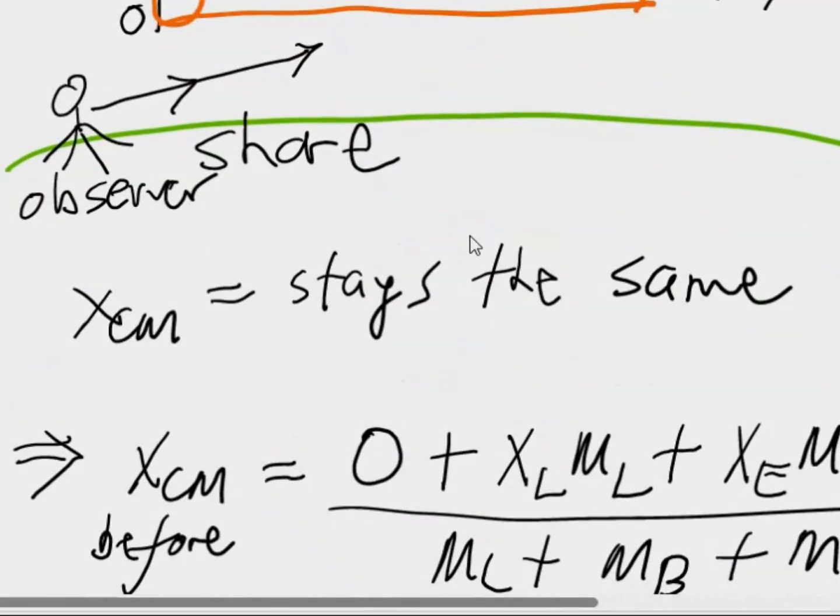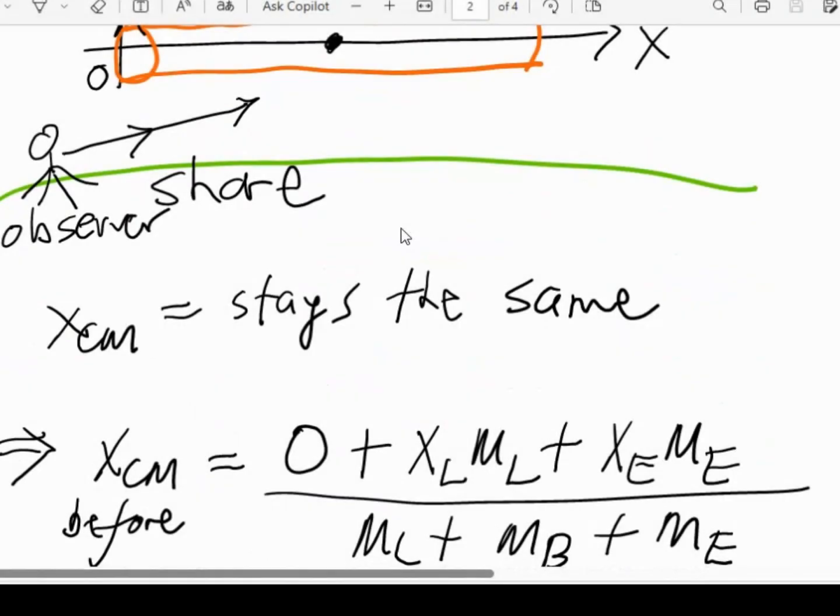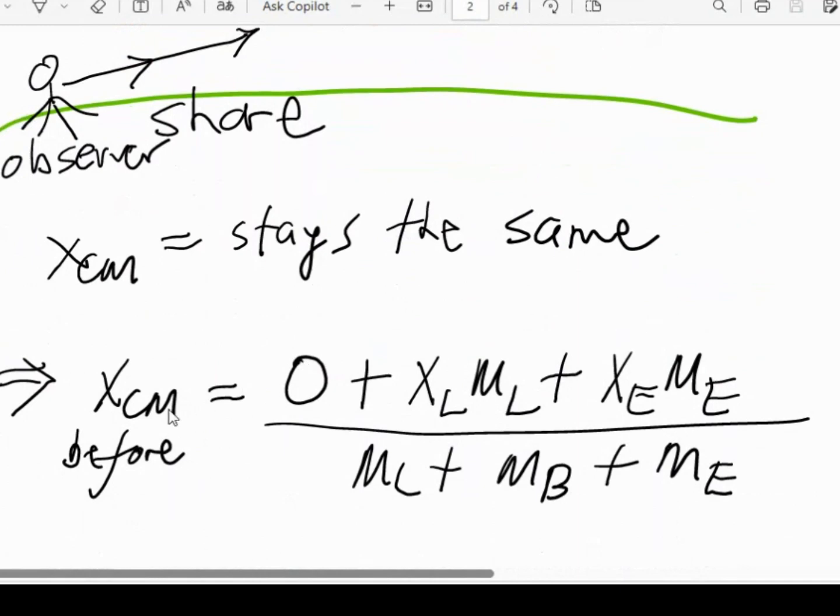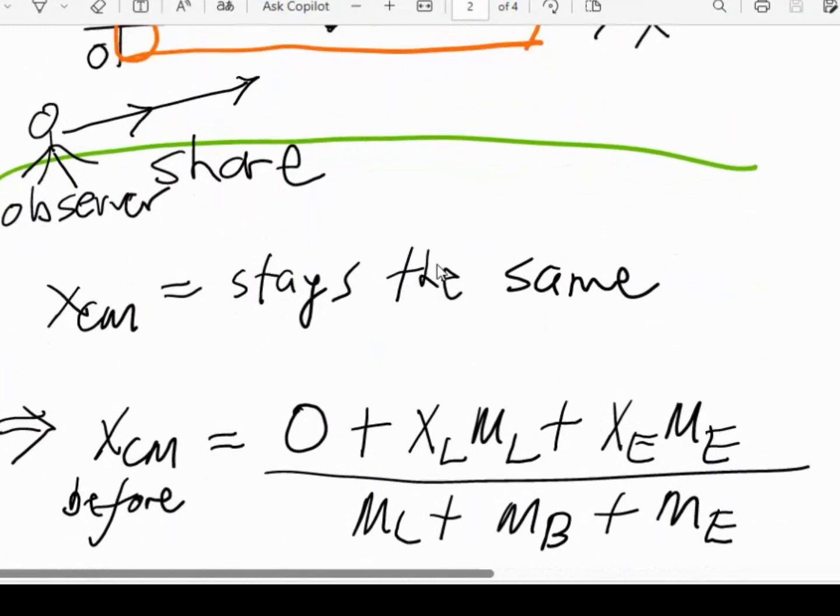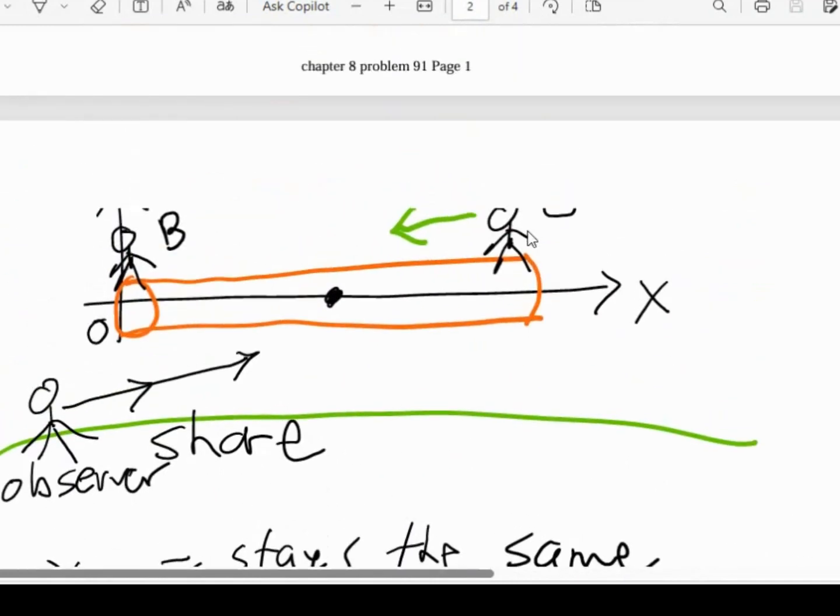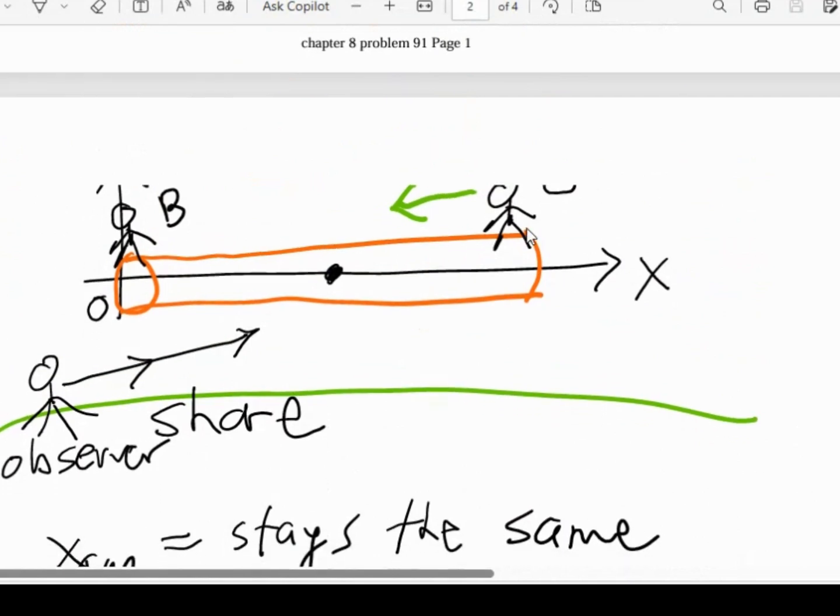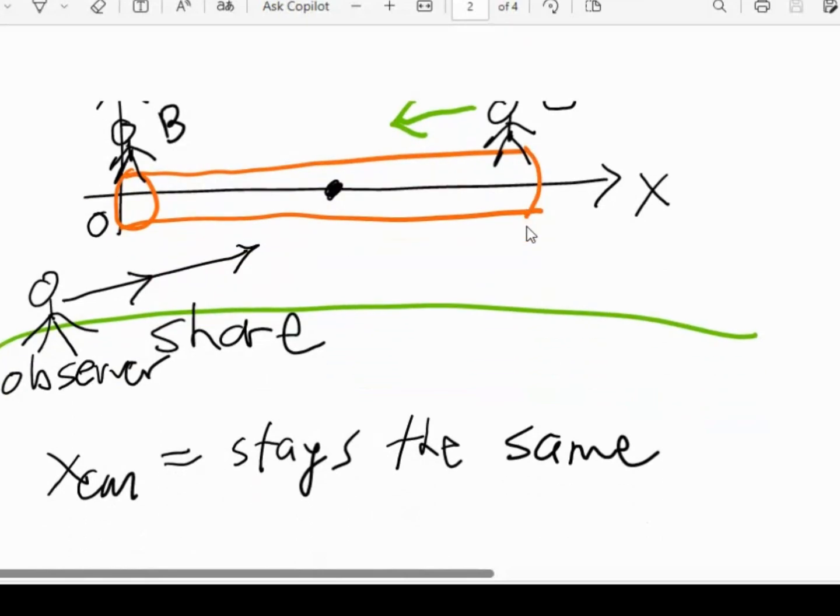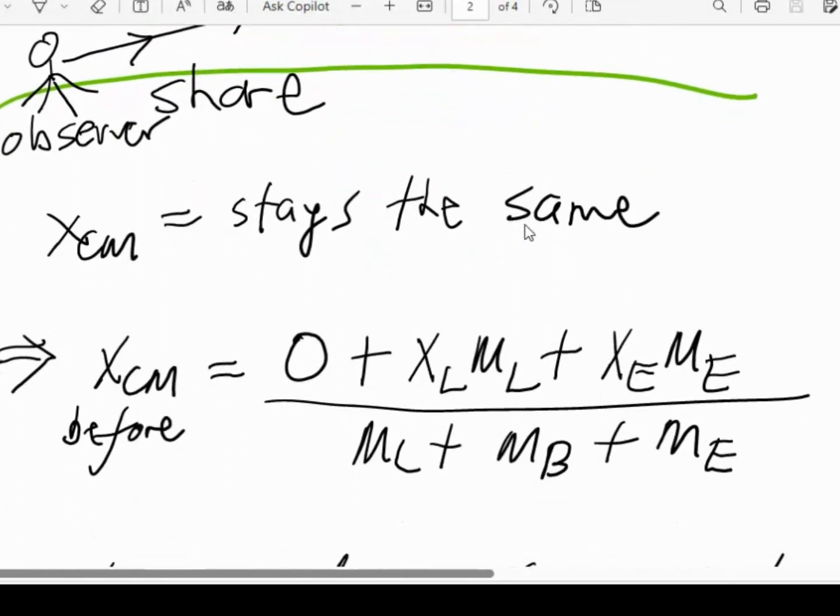So the center of mass of the system stays the same. And so we can determine the center of mass before the movement, before Ernie actually travels from one end of the log to the other end of the log. And so here's the center of mass equation.